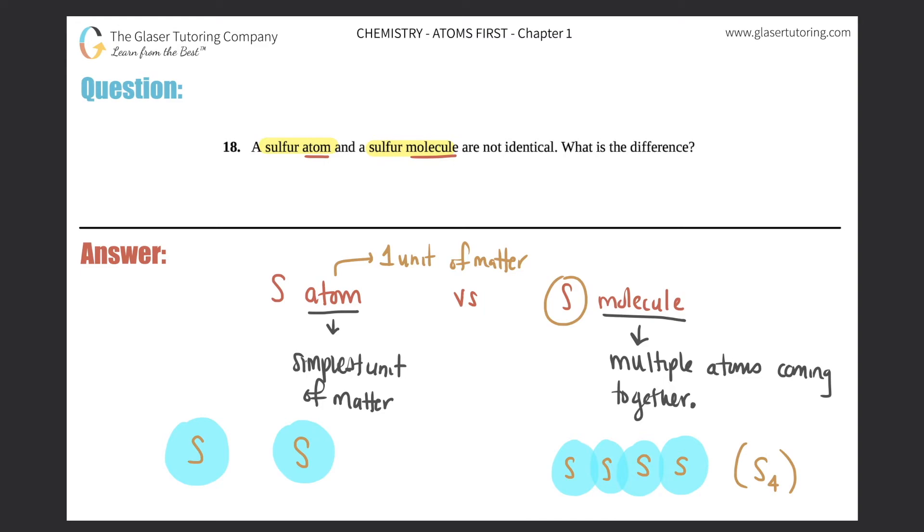So that's the difference between a sulfur atom versus a sulfur molecule. A sulfur atom is just one S, so when you have two of them they cannot be acting together. So you have one atom over here, you have another atom over here, they are not acting together, so this would just be represented by just saying S and S. On the other hand, sulfur molecule is when you have multiple of the atoms coming together to act as one single unit.